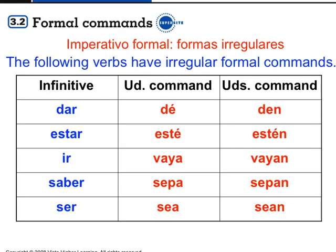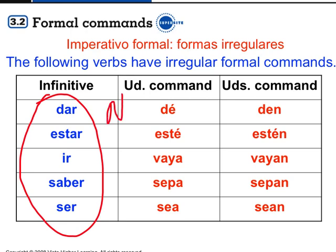If you remember the negative tú commands, the irregulars were the five verbs whose yo form did not end in O. The same five verbs are irregular in the formal commands — usted and ustedes. Here are their commands: dé, den; esté, estén; vaya, vayan; sepa, sepan; sea, sean. To make any usted or ustedes command negative, simply say no — like no dé usted, or no esté aquí.